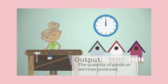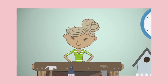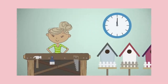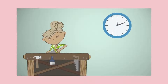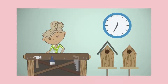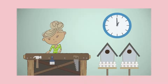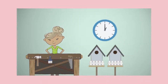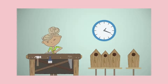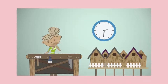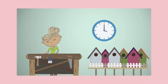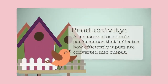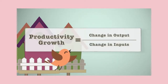With experience, Beth discovers better ways to make her birdhouses. By rearranging her production process, Beth is able to build more birdhouses in the same amount of time. She also develops skills that allow her to complete each step in less time. With these improvements, Beth can now make two birdhouses each hour. By increasing her output without an increase in the time she worked, Beth has increased her productivity. Productivity is a measure of economic performance that indicates how efficiently inputs are converted into output.